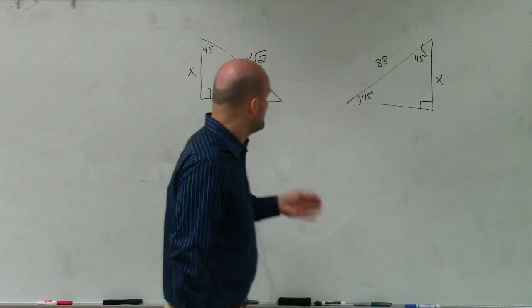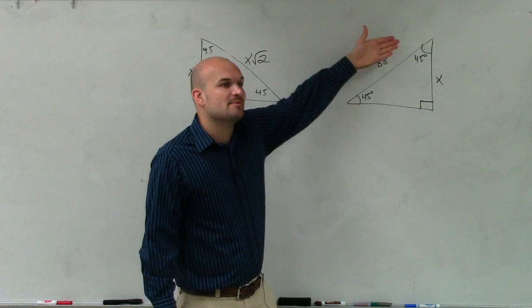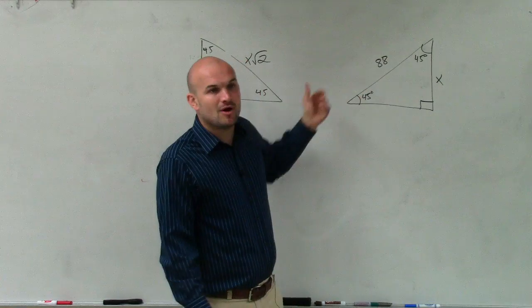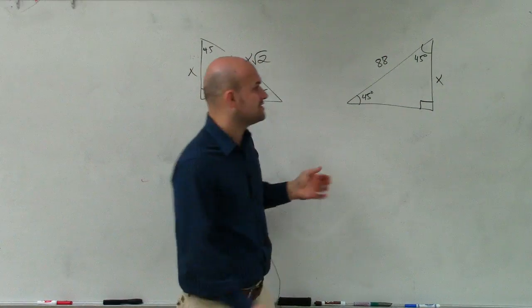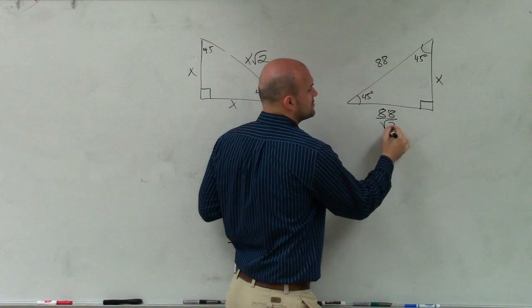Instead of going from the leg to the hypotenuse, where you multiply by the square root of 2, we're now at the hypotenuse and we've got to go backwards to the leg. So by going backwards, instead of multiplying by the square root of 2, we're now going to have to divide by the square root of 2. So this would be 88 divided by the square root of 2.